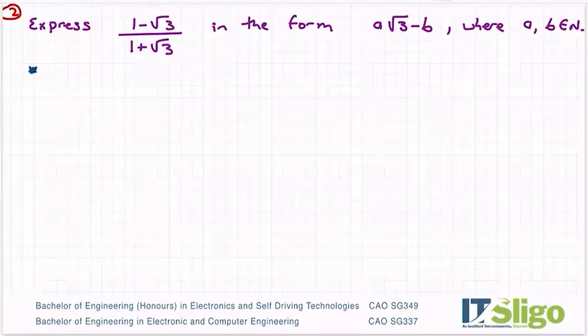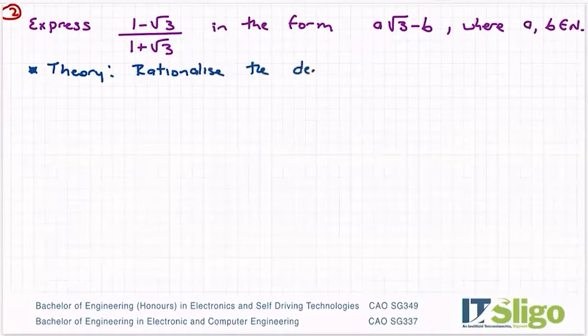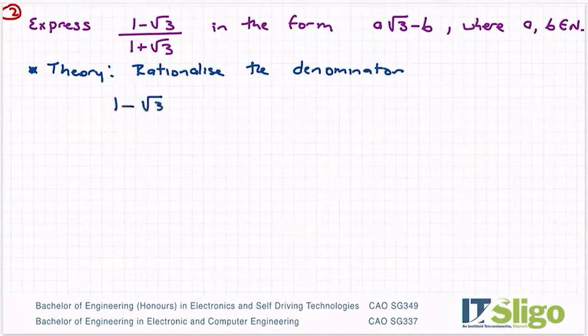So the key to this one or the theory that you have to remember is you must rationalize the denominator. You're not allowed to divide by irrational numbers in maths, so therefore you must change the denominator so that it's a rational number and you will make it rational if you multiply it by the conjugate of the bottom.